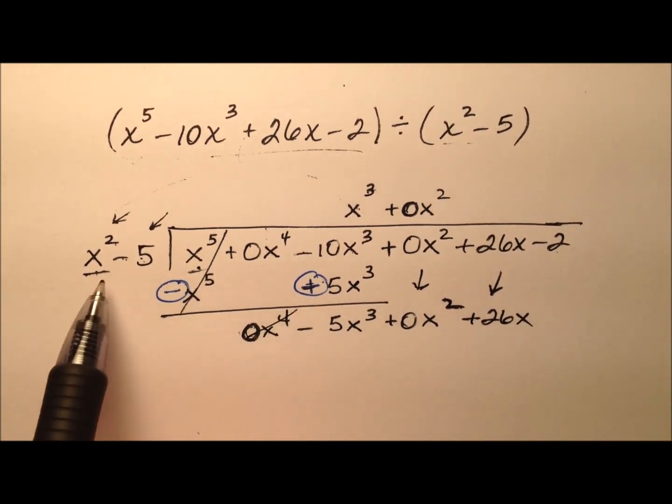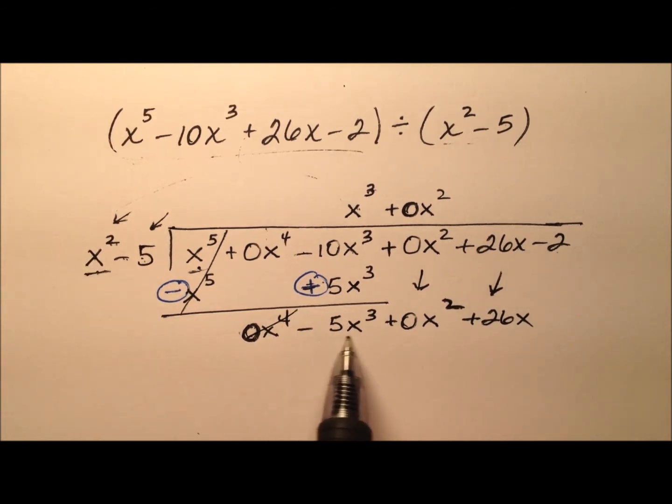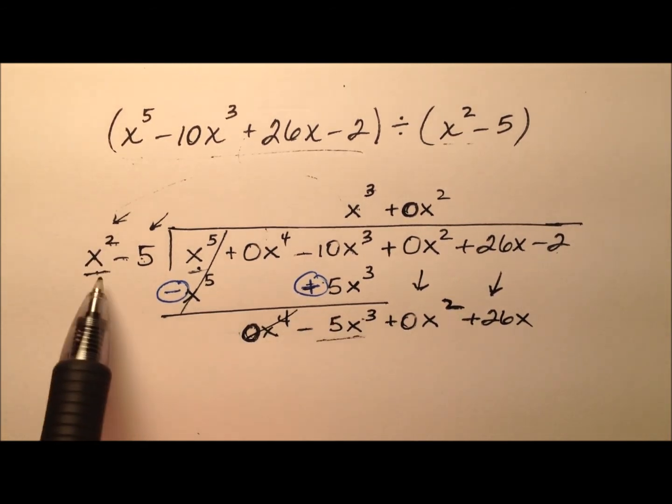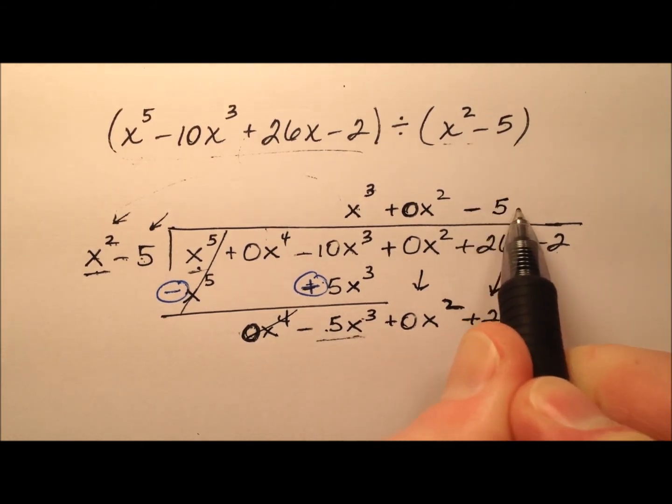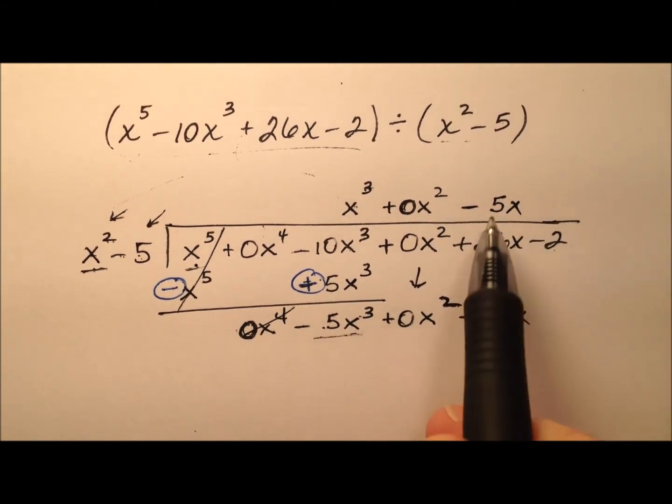So what do I need to multiply by x squared to get this first term now, negative 5x cubed? Well it looks like negative 5x, so let's go ahead and put that here, negative 5x.